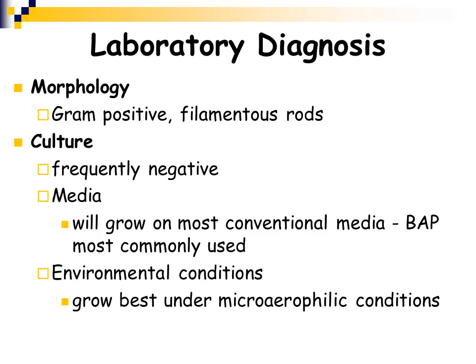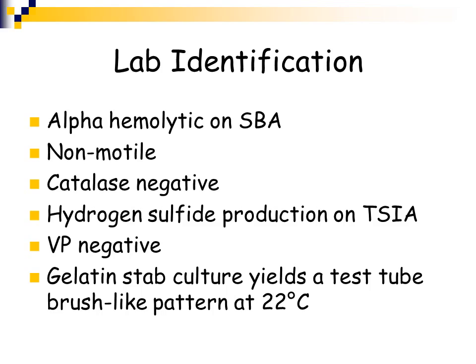In the laboratory, Erysipelothrix is a gram-positive filamentous rod. It takes two to three days to grow on agar media, making it difficult to isolate — cultures are often negative. It will grow on conventional media such as 5% sheep blood agar, and it is best grown under microaerophilic conditions — lower oxygen tension. It will grow within a few days in a CO2 incubator, but doesn't grow well in ambient air. On sheep blood agar, it is alpha hemolytic.